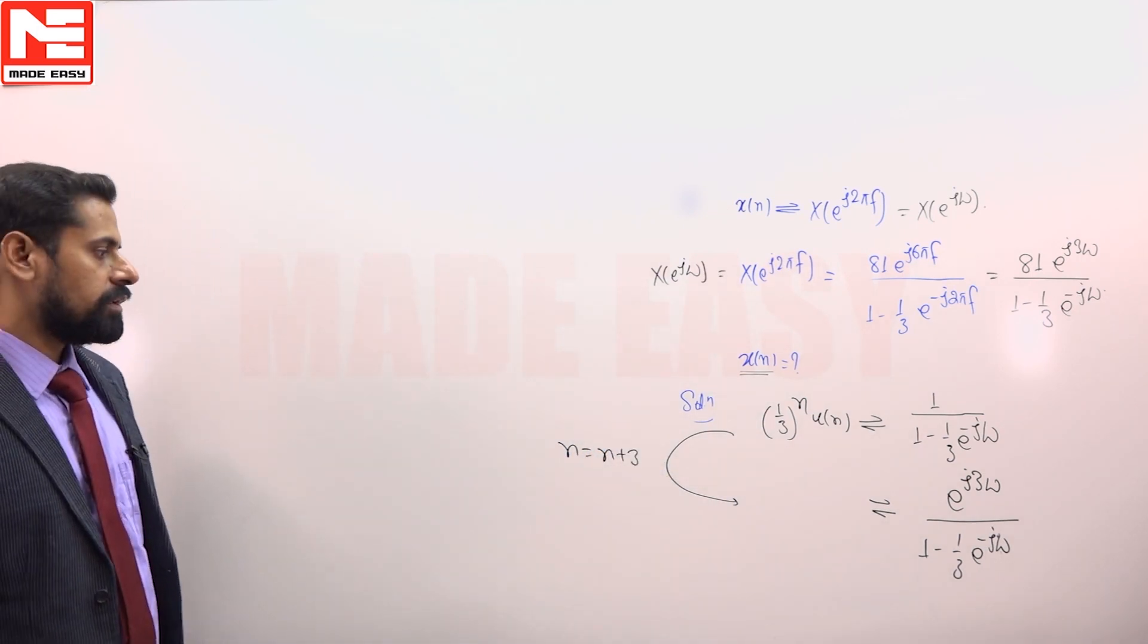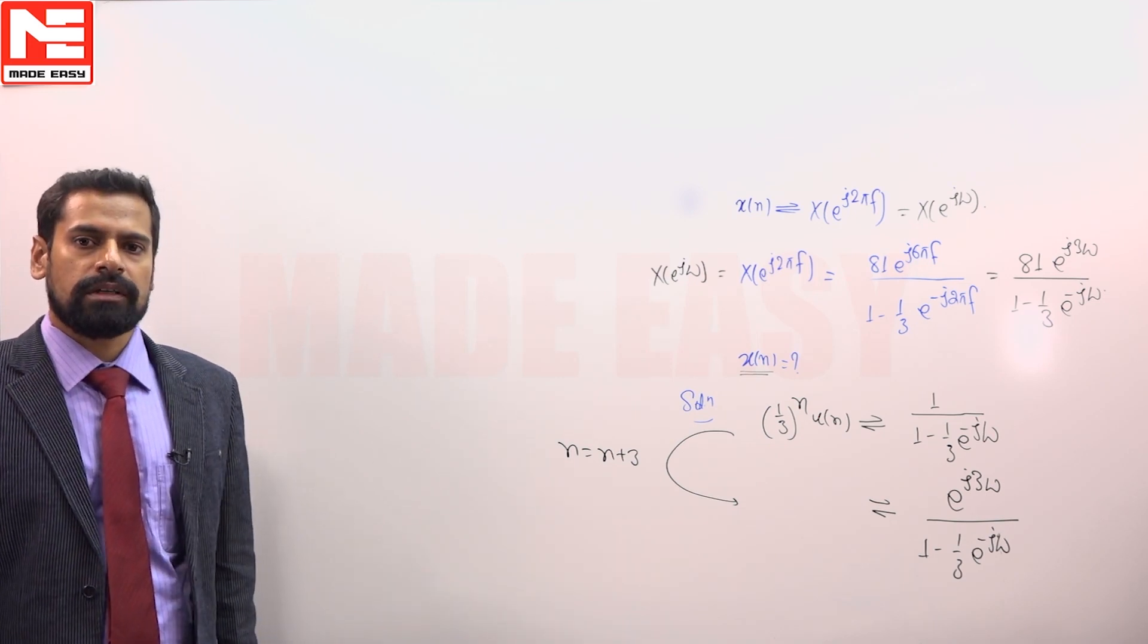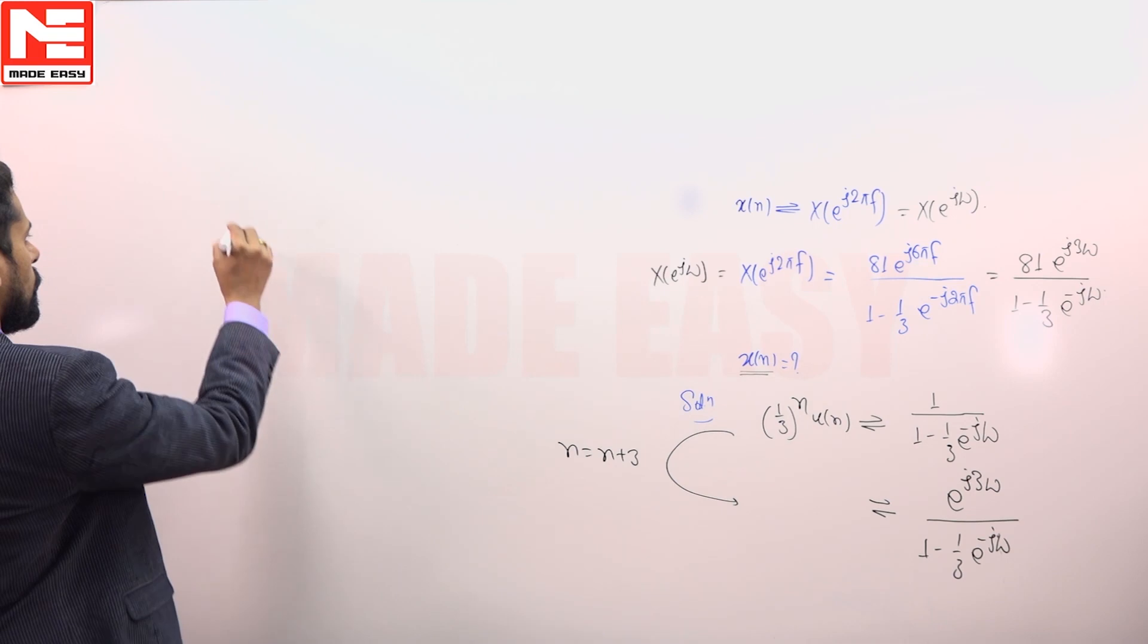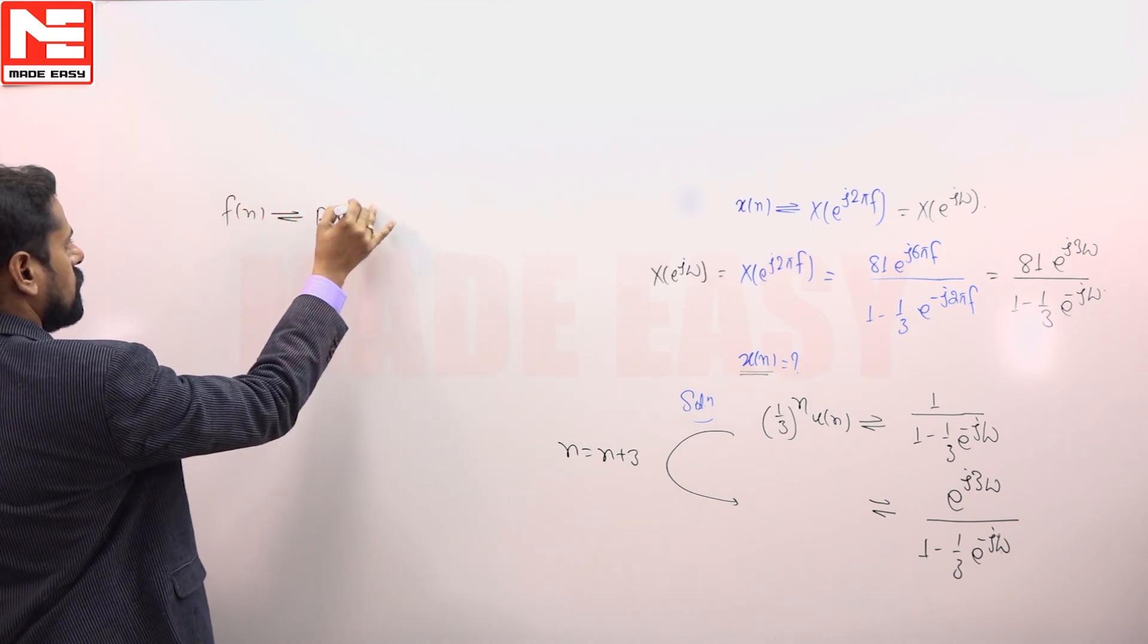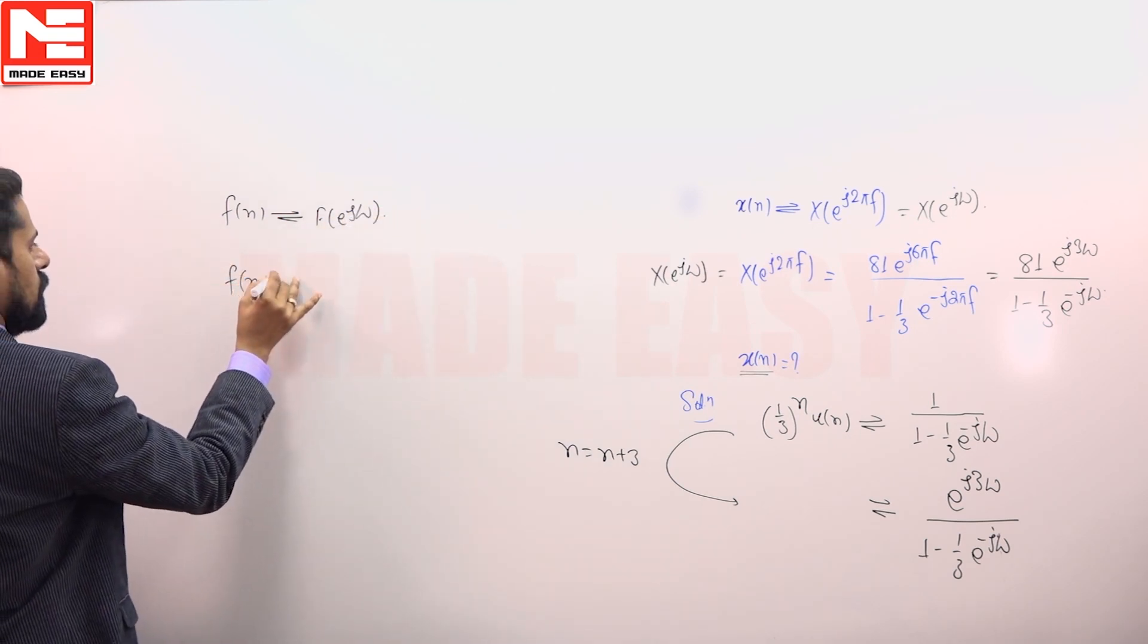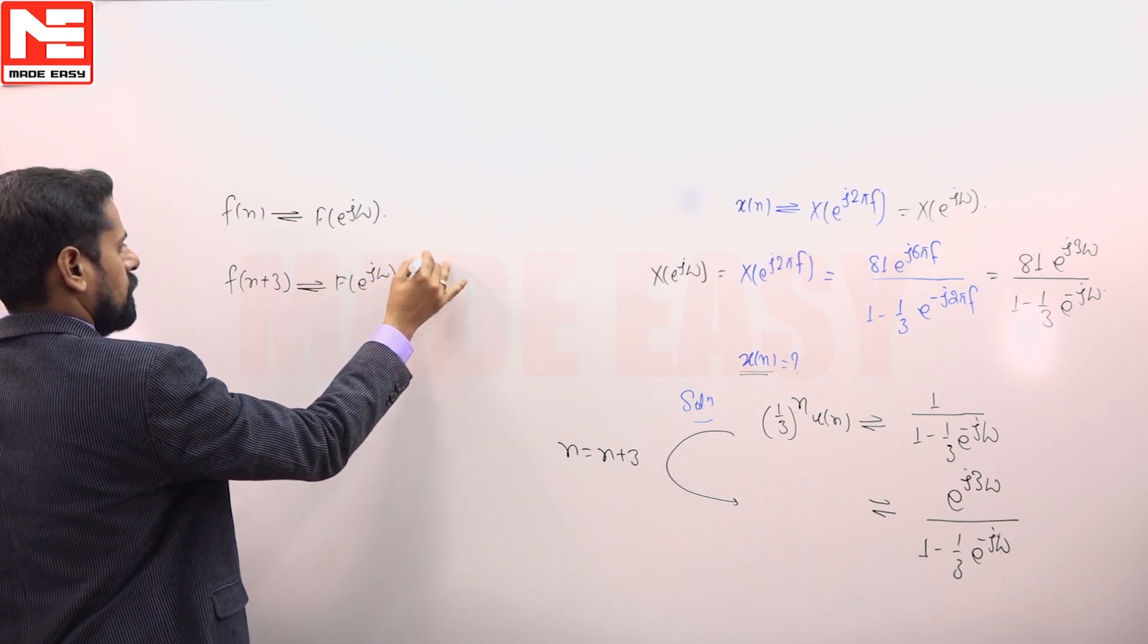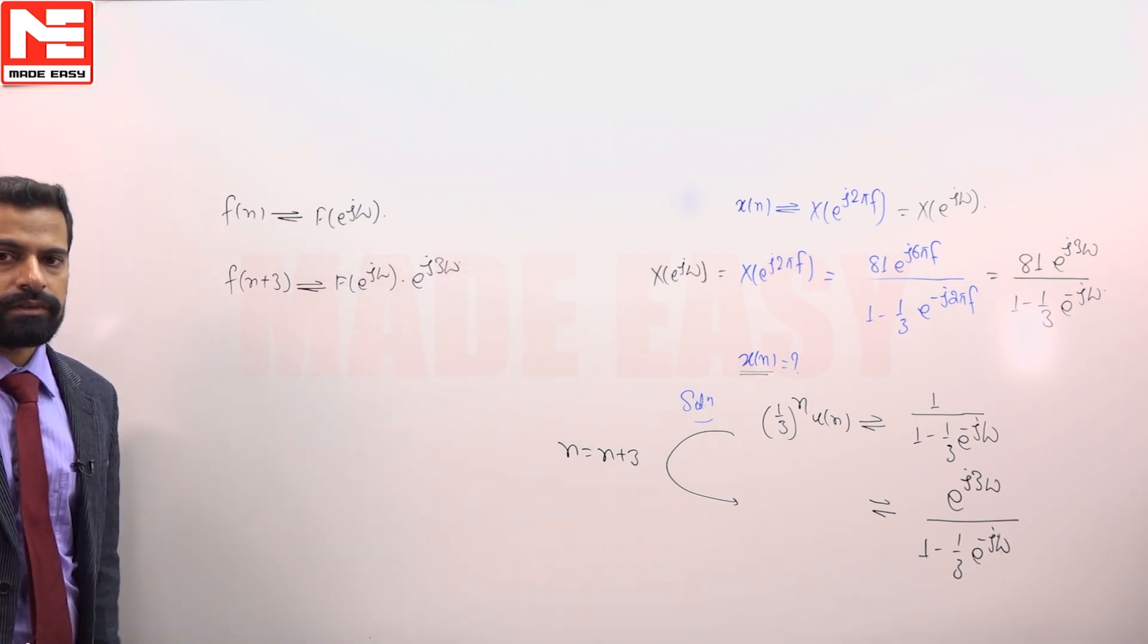Because we are going to use time shifting property. According to time shifting property, for f of n with Fourier transform F(e^(jω)), then for f of n plus 3, the transform will be F(e^(jω)) into e^(j3ω). So we have used this property.